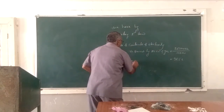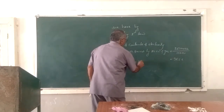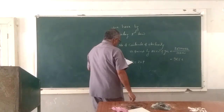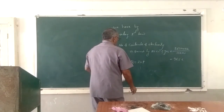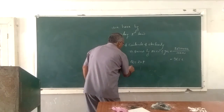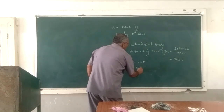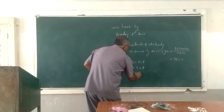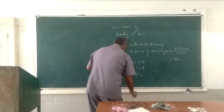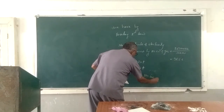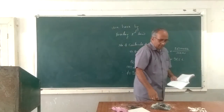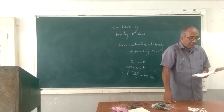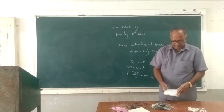Knowing the coulombs required, we calculate Q using Q = I × T. The current I is 5 amperes and time is T. Therefore T equals 965 divided by 5, which gives 193 seconds. This is the amount of time required for collecting 112 cubic centimetres of hydrogen gas.